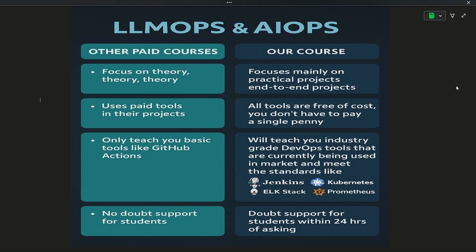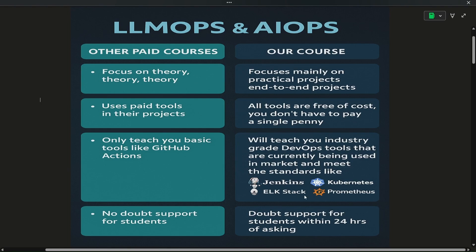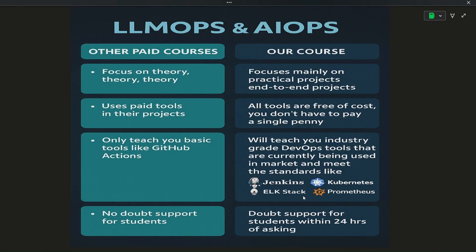We will be teaching you all the industry-level tools that are currently being used in the market. Like Jenkins, Kubernetes, and ELK stacks — ELK means Elasticsearch, Logstash, Kibana — basically used for Kubernetes logging. Then we have Prometheus, and other tools like CircleCI and GitLab as well.